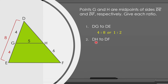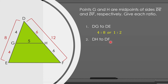Number two: find the ratio of DH to DF. Since H is the midpoint of side DF, the measure of HF is equal to the measure of DH, so DH is equal to 6. DF is equal to 12 by adding 6 and 6. Therefore, the ratio of DH to DF is equal to 6 is to 12, or 1 is to 2 by getting the simplest form.